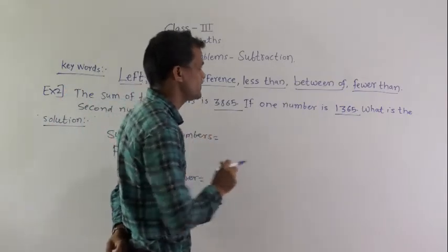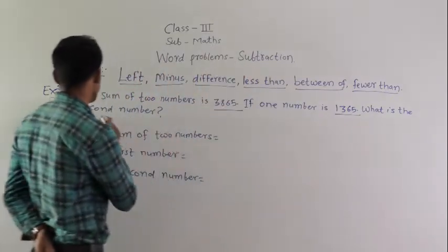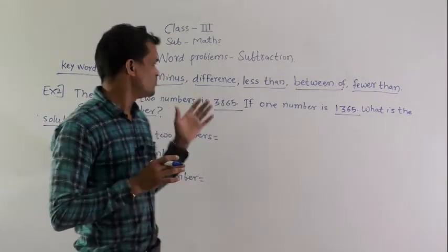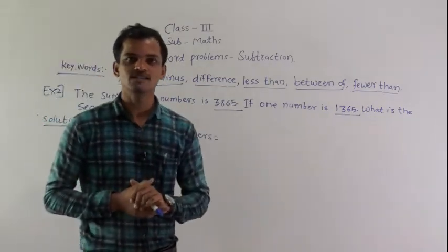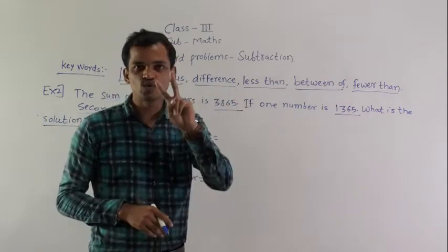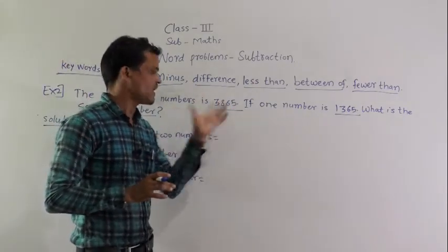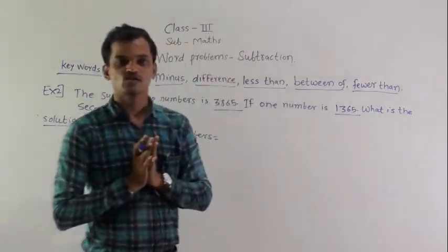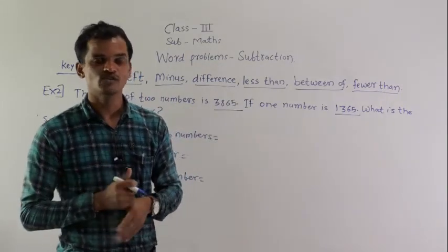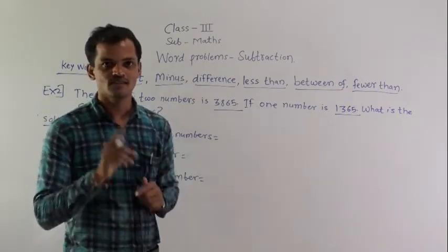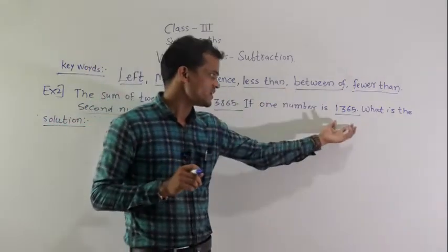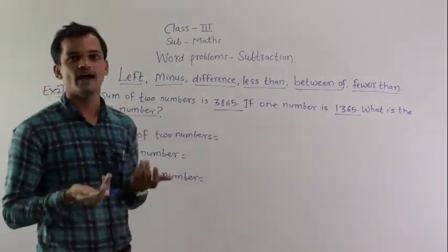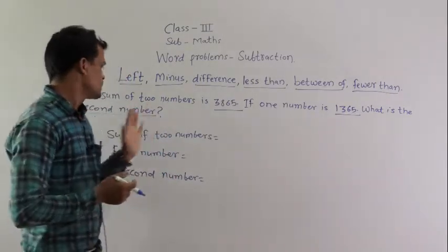After reading the example, we know: the sum of two numbers is 3865, and one number is given. We have to find the second number. The word 'sum' means the result of addition. If we subtract the first number from the sum, we will get the second number.